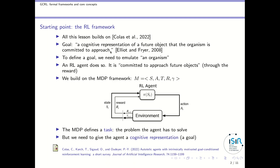If we want to formalize this notion of goal, first we need to emulate an organism, and the idea is that an RL agent is the perfect object to emulate this organism. If you consider the MDP framework, the RL agent is committed to approach future objects through the reward function by interacting with its environment. So we will build on the MDP framework with the state space, the action space, the transition function, the reward function, and eventually some discount factor.